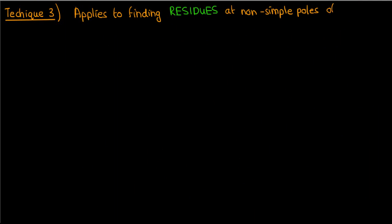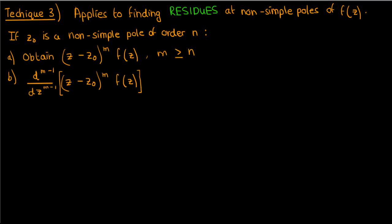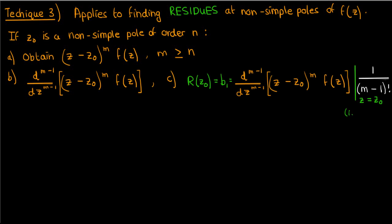The third and final technique is an extension of technique 2 and applies to higher-order poles. Suppose f of z has a pole of order n at z naught. You multiply f of z by (z minus z naught) to the power m, where m is an integer greater than or equal to n. Then differentiate that expression m minus 1 times. Finally, divide that derivative by (m minus 1) factorial and evaluate at z naught. This final quantity is the residue at the higher-order pole z naught.